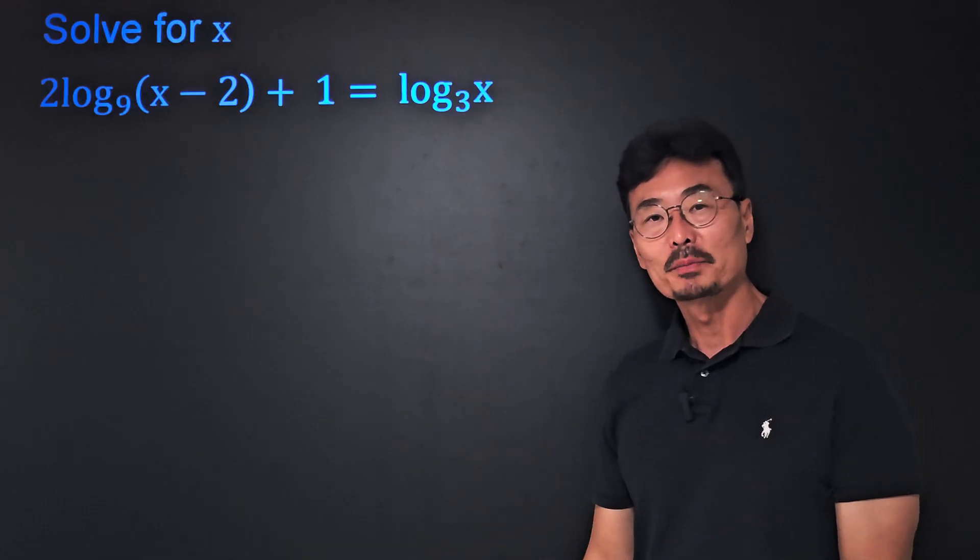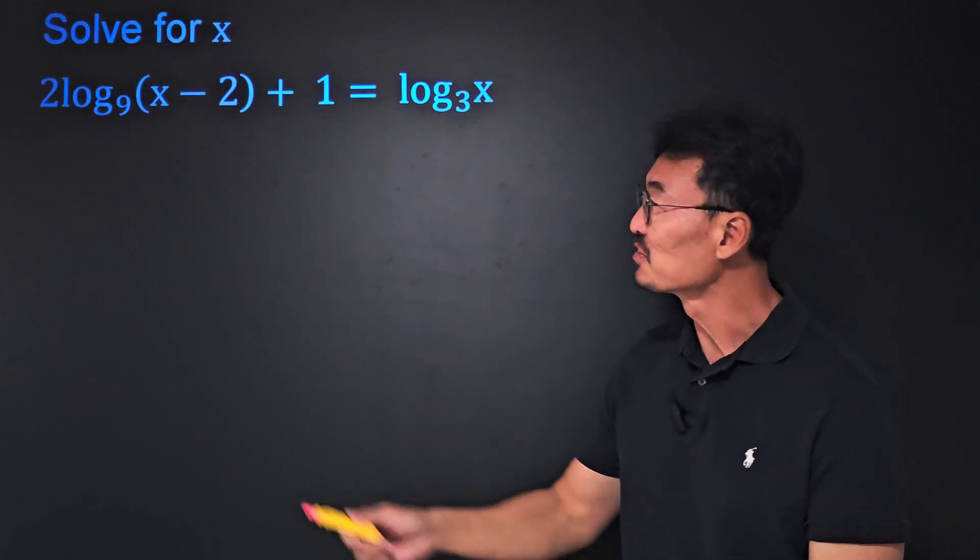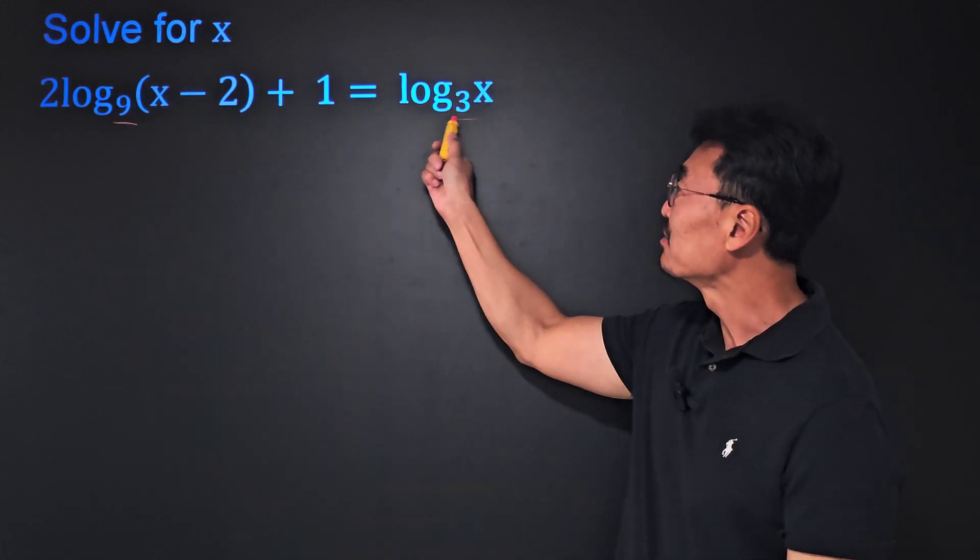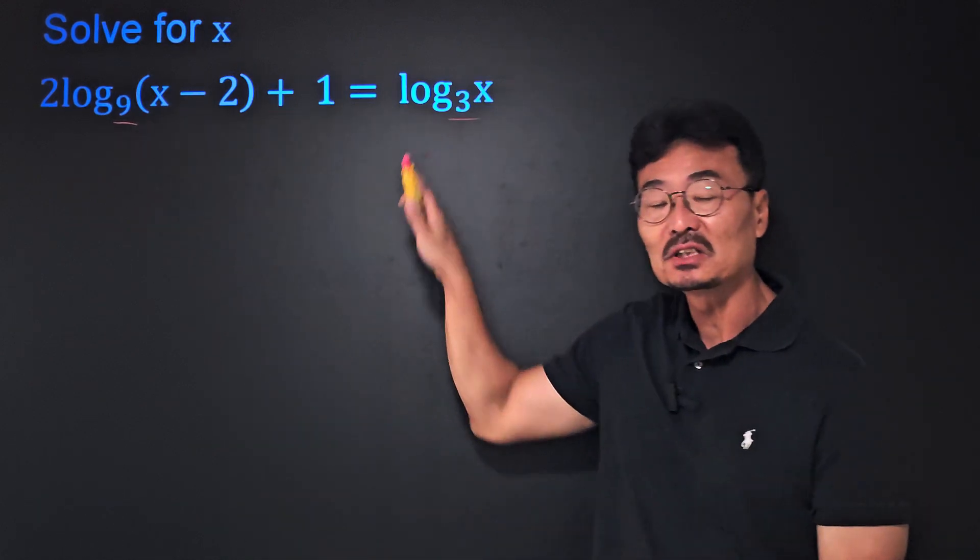This log problem right here would have been your usual textbook problem if it wasn't for one thing. Notice that the base here is 9 while the base here is 3. We need to make the base for each and every log the same before we could start combining them.